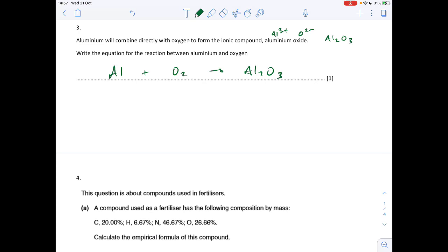And to balance this, I'm going to put a 2 there and I'm going to put a 3/2 there. Now if you're not a fan of that, what you can do is multiply it out. So we're going to double everything out and you would get a 4 here and a 3 there and a 2 in front of that.